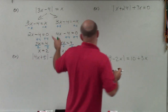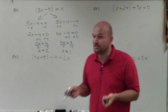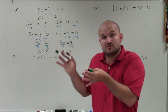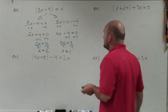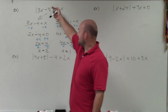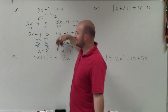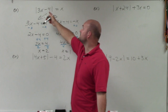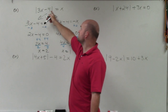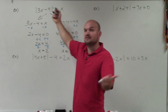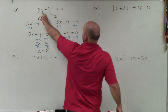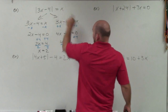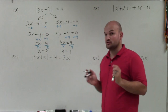Since there is a variable on both sides, it's really important to make sure you check for extraneous solutions. That's not going to come up when we have an absolute value equal to a number, but when we have a variable on both sides, it's extremely important. Let's go ahead and check our solutions. Plugging in 2: 3 times 2 is 6, minus 4 is 2, absolute value is 2 — plug 2 in for x, it equals 2. For x equals 1: 3 times 1 is 3, minus 4 is negative 1, absolute value of negative 1 is positive 1, which equals 1. So both solutions work.